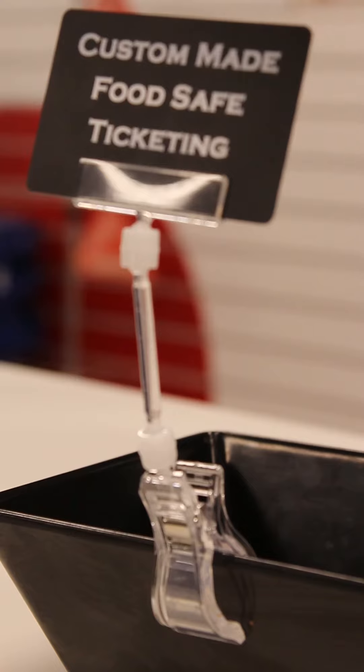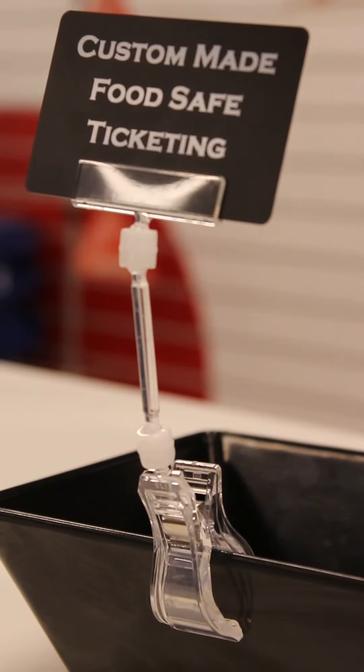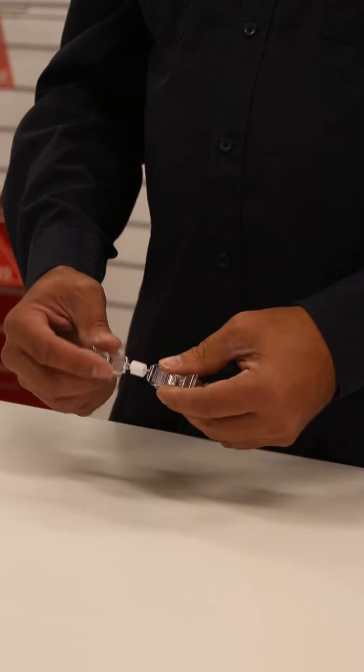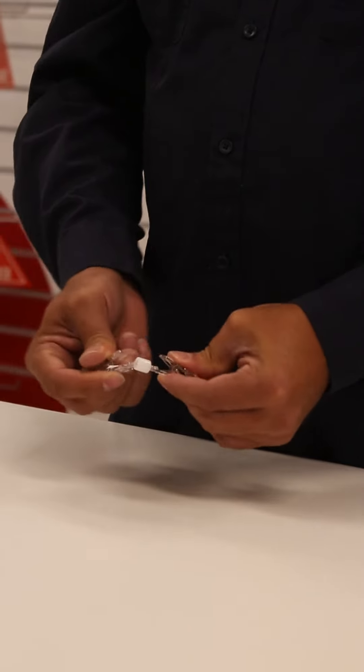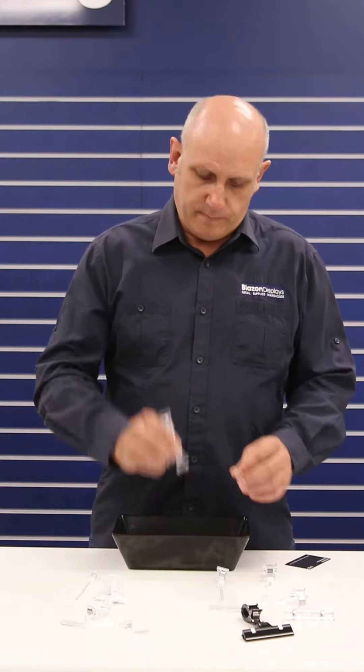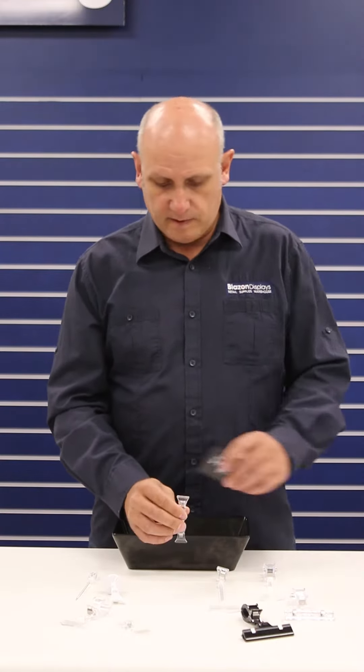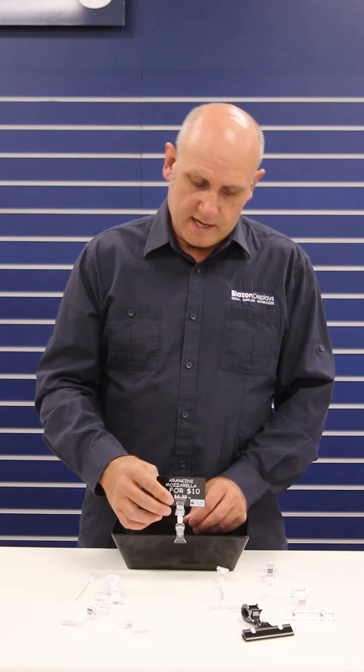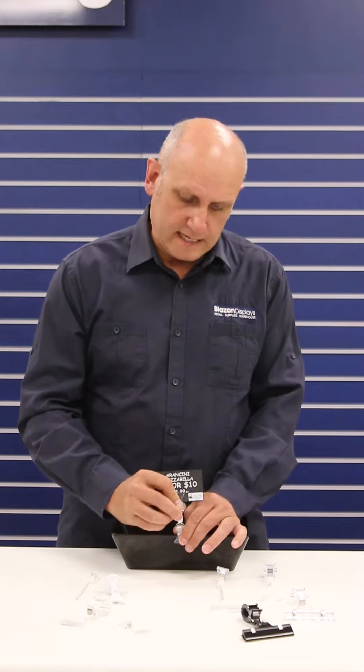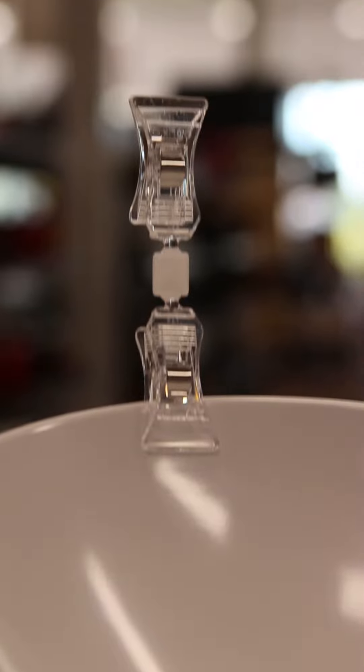Let's have a look at some of those, shall we? You can see it's exactly the same on both sides which allows you to have the clip straight onto the bowl and the clip straight onto your ticketing, something like this perhaps. And then the universal joint just allows you to tilt it so you can display it. Very simple.